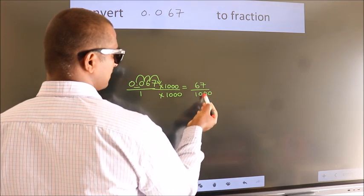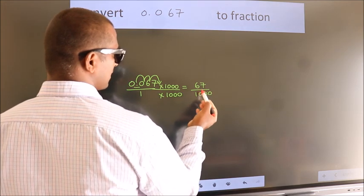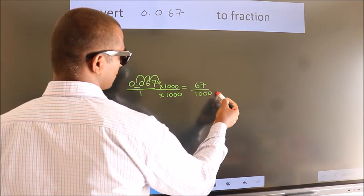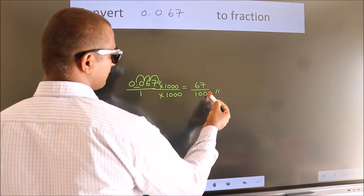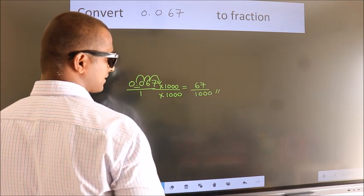This cannot be simplified any further. So 67 over 1000 itself is our fraction.